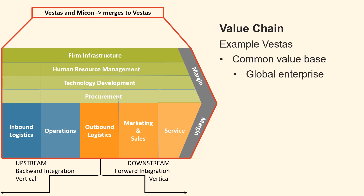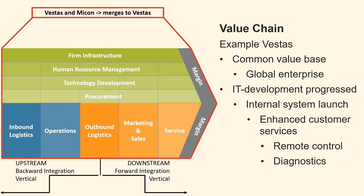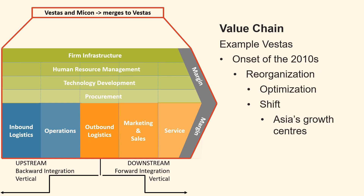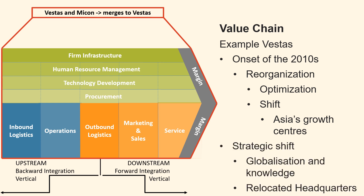Vestas restructured into divisions centred on individual business units, establishing a shared value foundation for the now global enterprise. IT development progressed rapidly, marked by a comprehensive internal system launch and enhanced customer services, including remote control and diagnostics from the expansive computer network at headquarters. The onset of the 2010s was marked by a reorganization that included outsourcing, optimization, and a shift towards Asia's new growth centers. In line with this strategic shift towards globalization, Vestas relocated its headquarters to Aarhus, Denmark, in 2011.